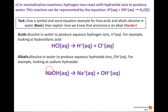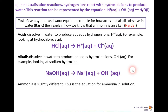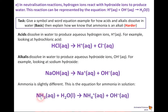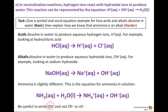Alkalis dissolve in water to produce aqueous hydroxide ions, OH−. For example, sodium hydroxide: NaOH → Na⁺ + OH⁻. Ammonia is slightly different — the equation for ammonia in solution is: NH₃(aq) + H₂O → NH₄⁺ + OH⁻. Be very careful to write OH with capital letters followed by a minus sign — not just O or O minus. These chemical symbols need to be burned into your memory for the exam.